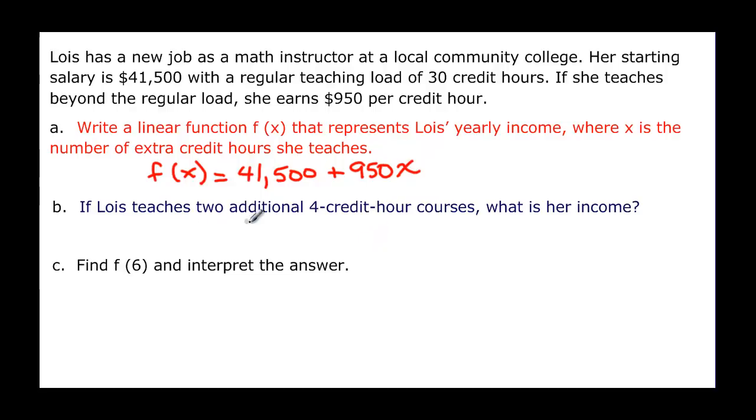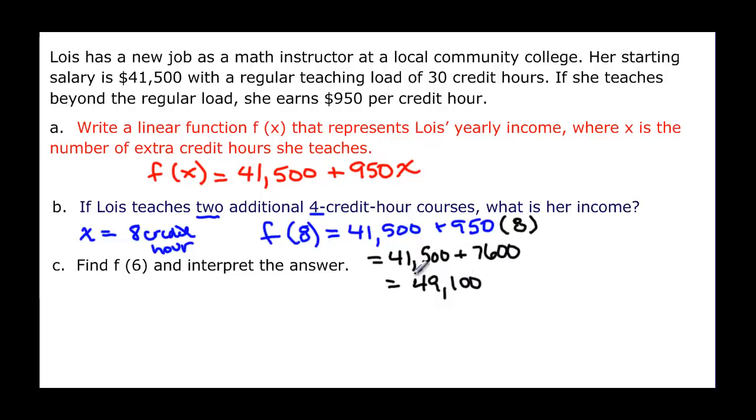B then says if Lois teaches 2 additional 4-credit hour courses what is her income? Well 2 four-credit hour courses is going to be how many hours? It's an x and that means that she's going to have 8 credit hours. So it's an x so it's really asking us for f(8). And how do we do that? Remind yourself it's $41,500 + $950. But now instead of writing x we write the 8 that was in parenthesis. Well this then gives us $41,500. And 950 times 8 would be $7,600. And if we want to solve that then we would say that we had $49,100 income.